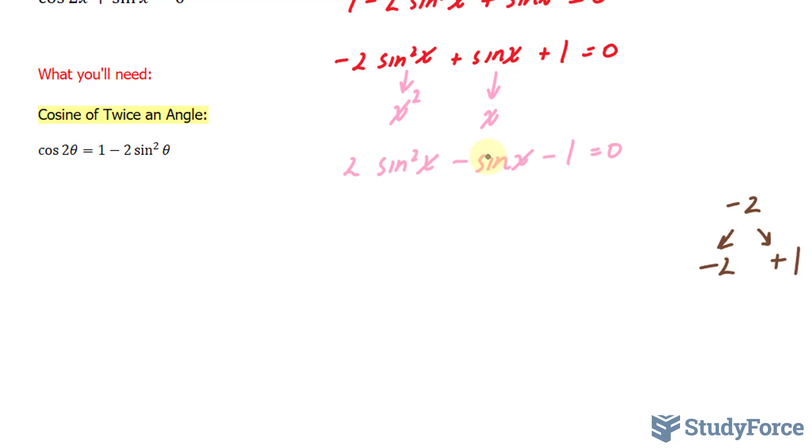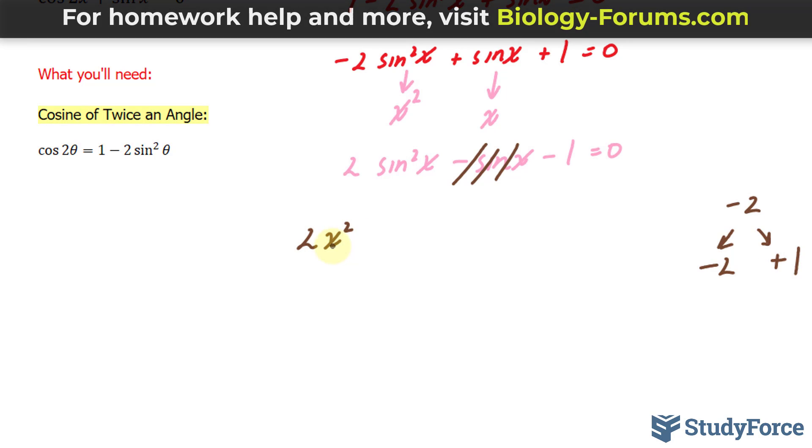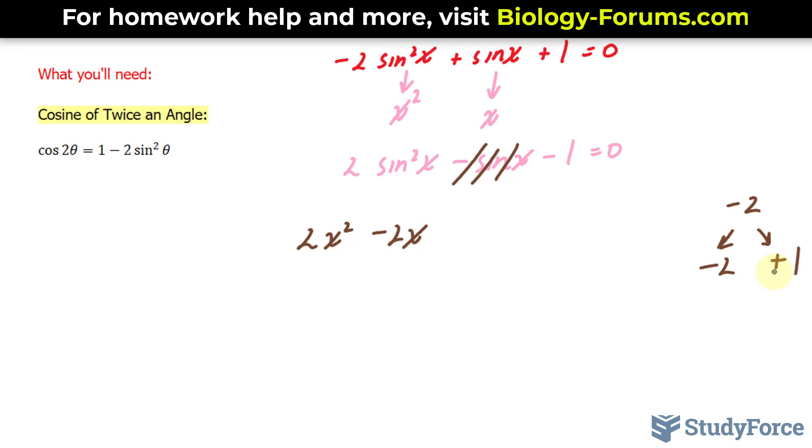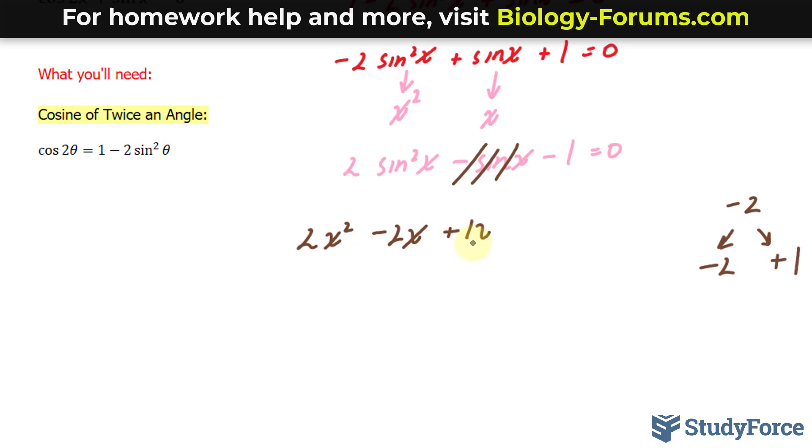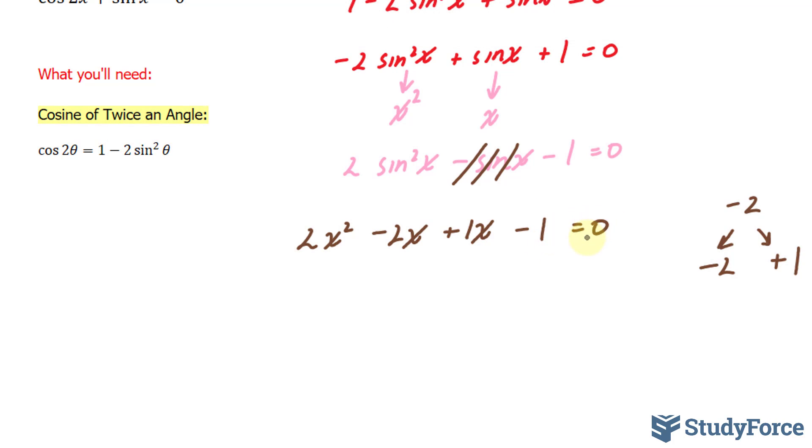Once we find these two numbers, we will decompose the middle term where we have two, and remember, I'm not going to use sine just so that I don't get confused. I'm going to use x. I have two x squared minus two x plus one x minus one. In case you're curious, this technique is called factoring by decomposition for this exact reason where the middle term gets decomposed, gets broken down.